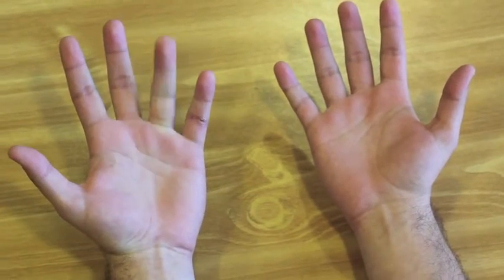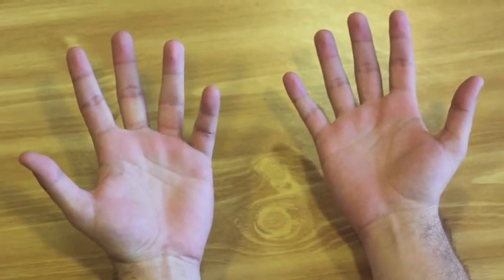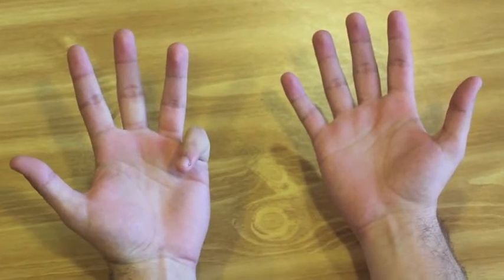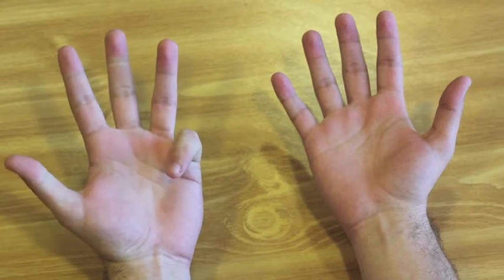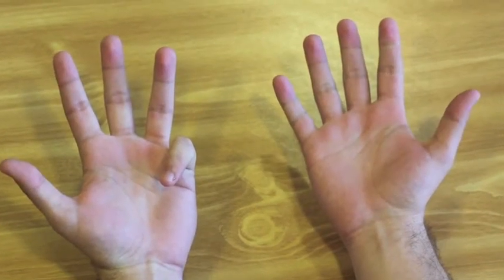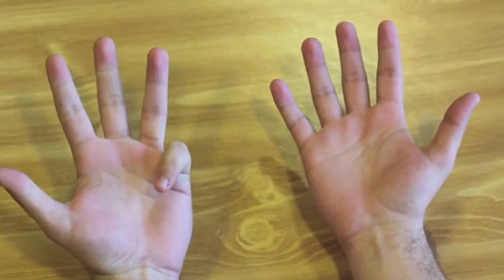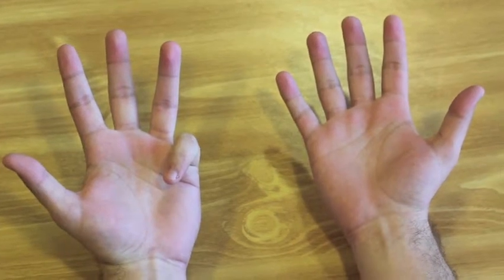We're going to lift up our ring finger. And now we're going to put down our pinky for 9 times 5. 9 times 5 equals 45. We have 4 fingers on our left and 5 fingers on our right, 45.